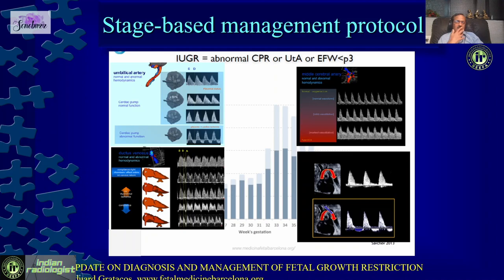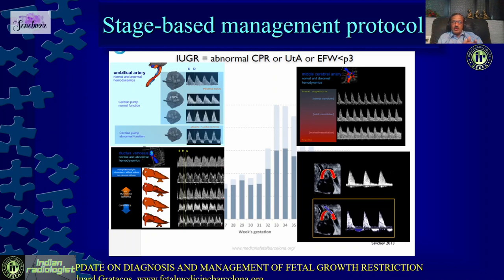We have looked at various Doppler parameters and the biophysical profile. Now we need to put everything together and interpret them collectively. We can't just look at the umbilical artery alone and make a decision — we need to put all parameters together for a management decision. We can do this in two ways: using the stage-based management protocol made popular by Gratacos, or the new management protocols published in August 2020. There is not a very significant difference between them.